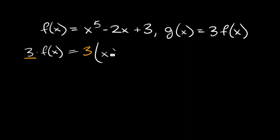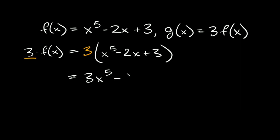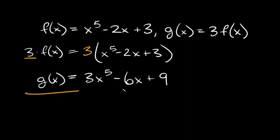So three f of x is going to be equal to three times x to the fifth minus two x plus three. And by distributing, this is going to be equal to three x to the fifth, and then three times negative two x is negative six x, and then three times three is positive nine. So this is our new g of x function.